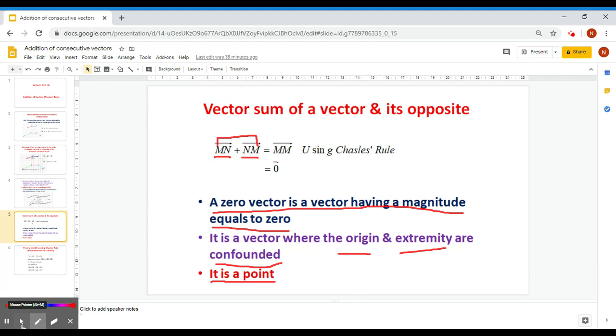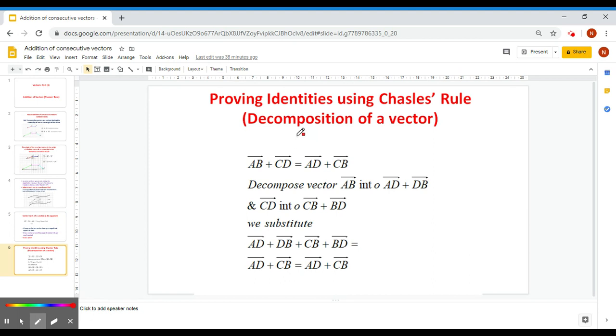Here is another application of Chasles' Rule, or more specifically, the converse of Chasles' Rule. We want to prove this identity: AB plus CD equals AD plus CB.